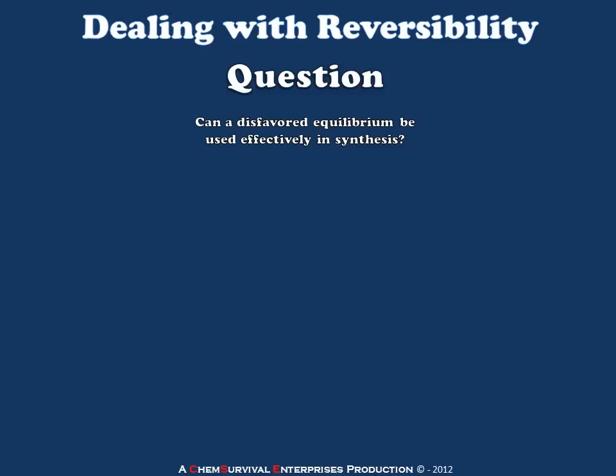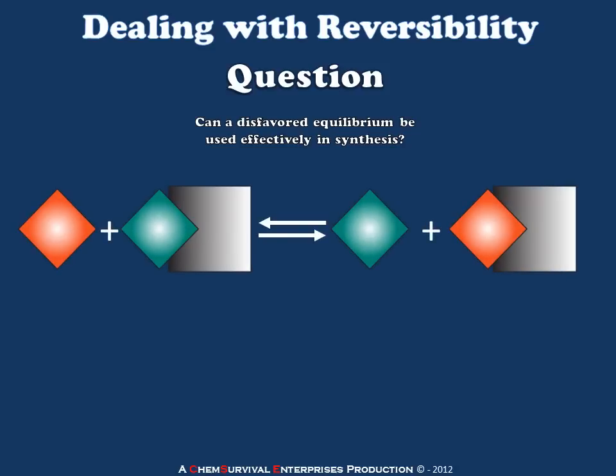The question I'm posing here — you already know the answer to — is: can a disfavored equilibrium be used effectively in organic synthesis? The answer is yes, as long as we thoughtfully design and run our synthesis. Let's consider a simple one-to-one reversible reaction, and we'll make this as simple as possible by making its equilibrium constant one.